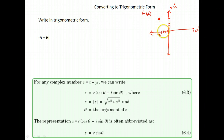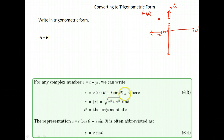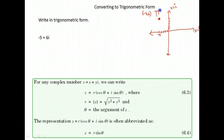The reason that is important is so that we know what quadrant we're working in, because as we write this in trigonometric form, we will have a cosine theta and a sine theta, and that will make a difference as to what angle we use depending on what quadrant we're in. This one is in quadrant 2 — negative on our x, positive on our y.